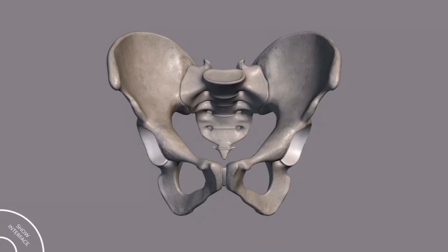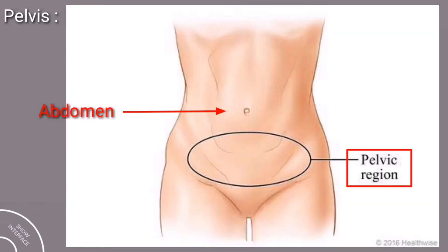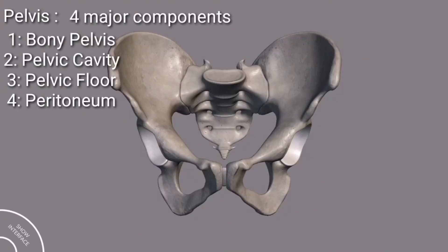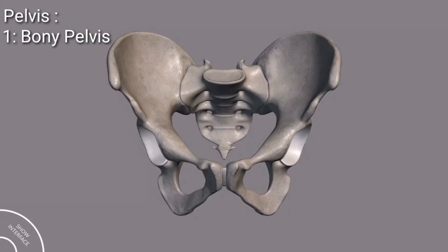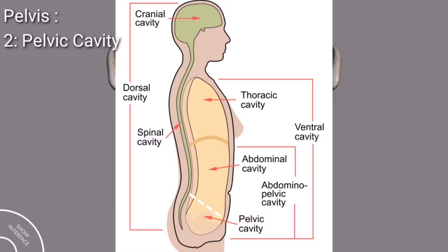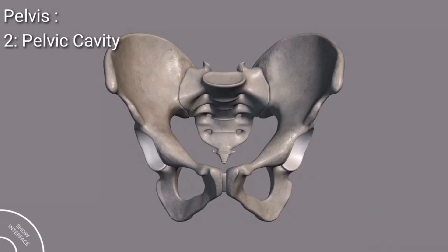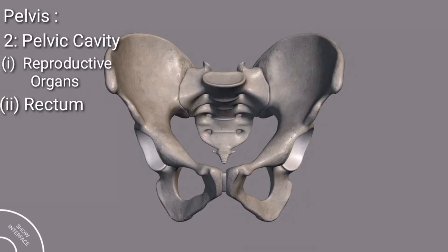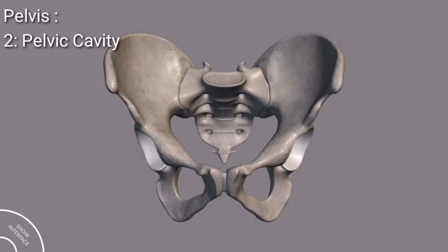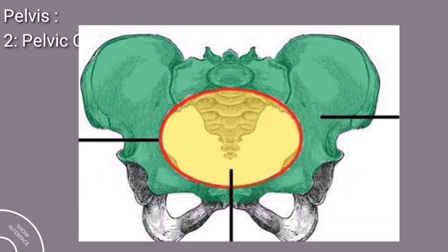Before going into detail of the pelvic girdle, I will discuss a few things about the pelvis. Pelvis is the area between the abdomen and the thigh, and it has four major components. One is the bony pelvis, also called the pelvic girdle. The second is the pelvic cavity, which is the extension of the abdominal cavity — the gap enclosed by the bony pelvis — and it mainly consists of the reproductive organs and the rectum.